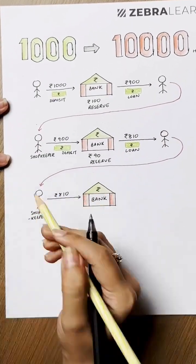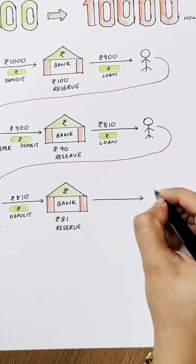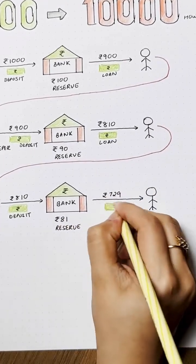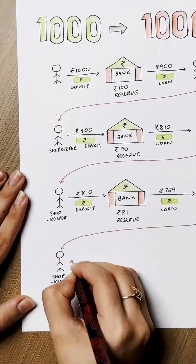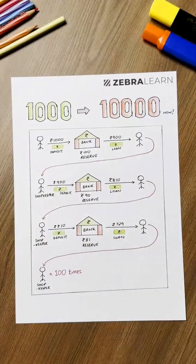This cycle keeps repeating. 810 rupees gets deposited, bank keeps 81, loans out 729, and on and on. This cycle continues for 100 more times. Every person here is part of the economy.